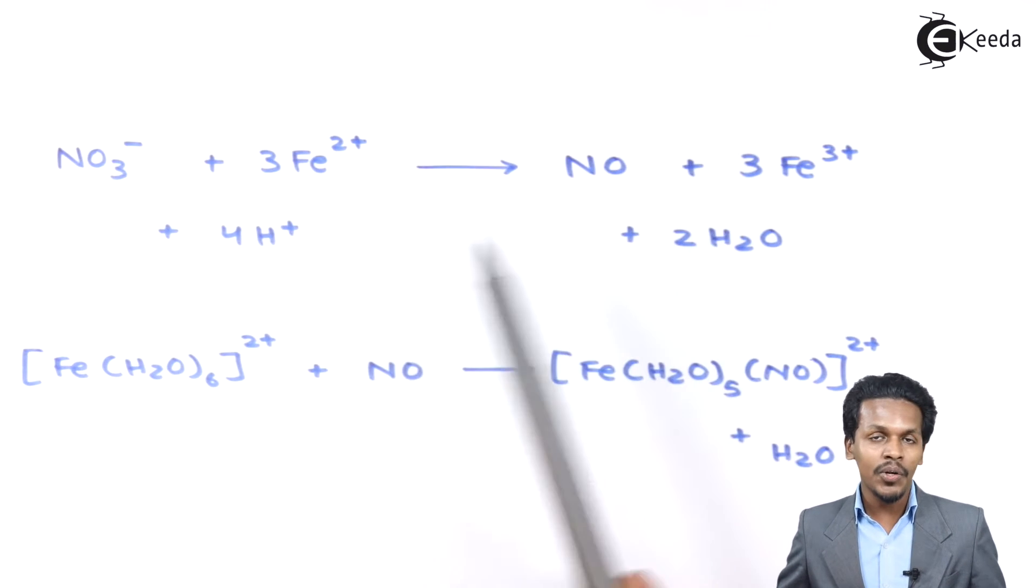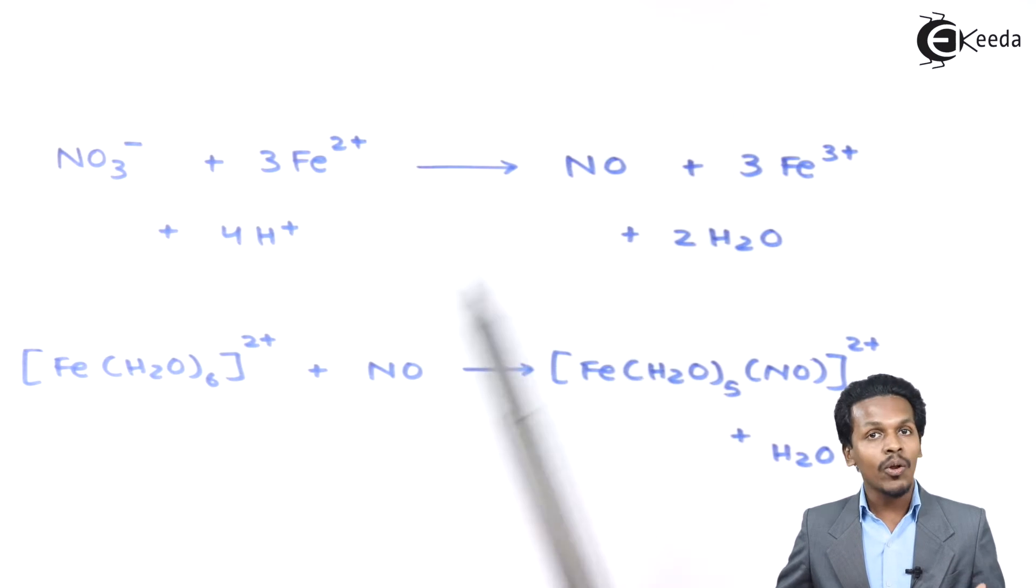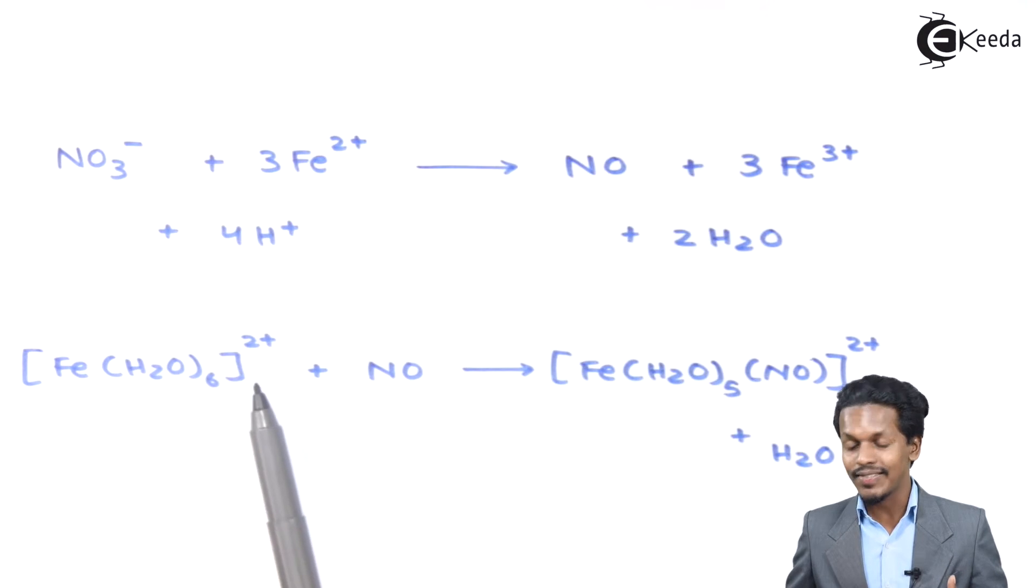This NO which is produced in the first step, as you can see in the first reaction, will be very helpful in forming the complex. This complex is Fe(H2O)6 with an oxidation state of 2+. When it reacts with the nitric oxide produced from the first reaction,